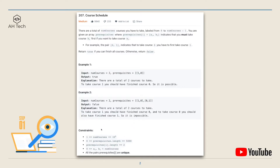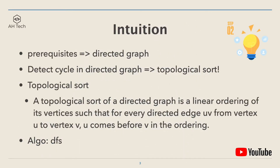The number of courses can go up to 10 to the power of 5. To solve this question, we first have to translate the prerequisites into another data structure. For example, a prerequisite of 0-1 can be thought of as an edge in a directed graph pointing from node 1 to node 0, because in order to finish course 0 we have to finish course 1 first. If there's a cycle in the directed graph, then we're not able to finish all the courses, so the question comes down to detecting a cycle in the directed graph.